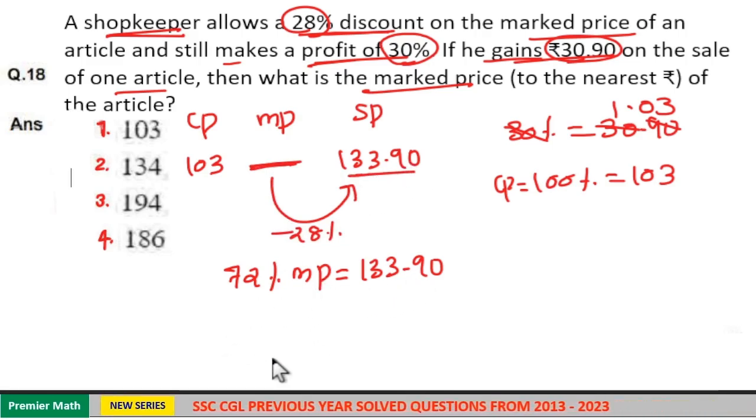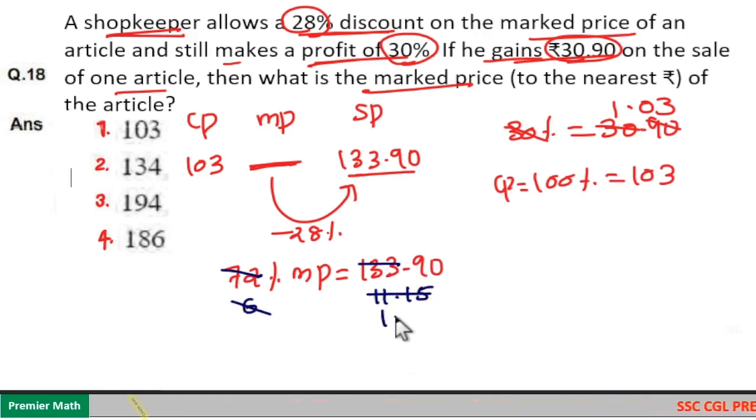So 72% of marked price = ₹133.90. If we cancel with 12: 12 goes 6 times in 72, 12 goes 11 times in 133. Then 6 goes 1 time in 11, remainder 5; 6 goes 8 times in 48, remainder 3; 6 goes around 6 times. So 1% = ₹1.96, which means 100% is the marked price.